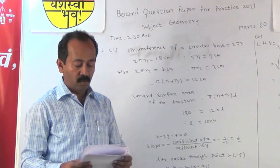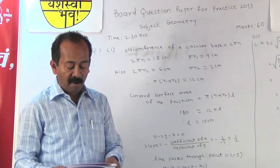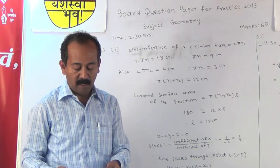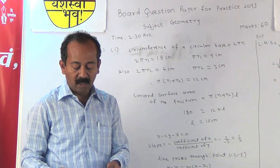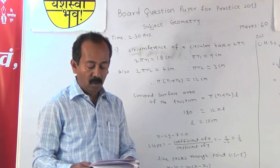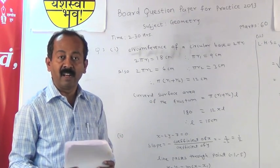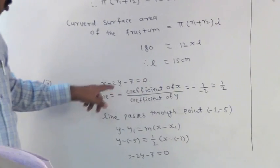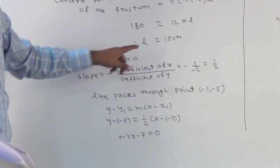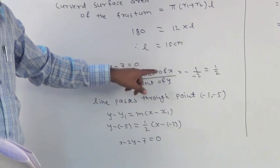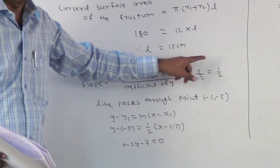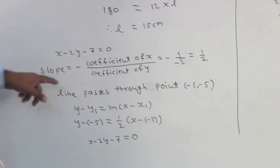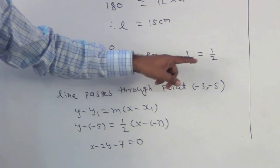Let us go for next question. Find the equation of the line passing through points minus 3 comma minus 5 and parallel to x minus 2y minus 7 is equal to 0. So, slopes of parallel lines are equal. So, x minus 2y minus 7 is equal to 0. So, slope of this line is minus coefficient of x divided by coefficient of y that is minus 1 upon minus 2 is equal to half. So, slope of the parallel line is also half. Now, line passes through the points minus 3 comma minus 4.